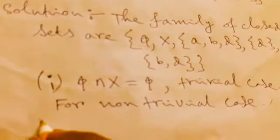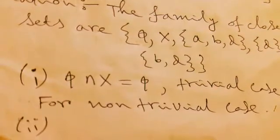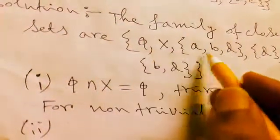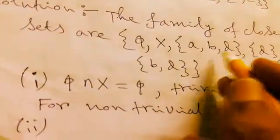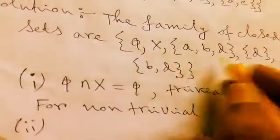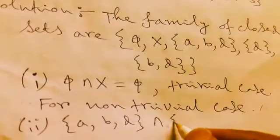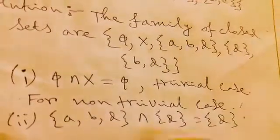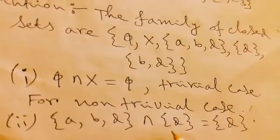For case two, {a,b,d} intersection X is {a,b,d}, which is non-empty. φ intersection {a,b,d} is φ. Excluding these cases and checking other pairs, we select {a,b,d} intersection {d}. Here we find {d}, so their intersection is non-empty. They don't have any empty intersection.